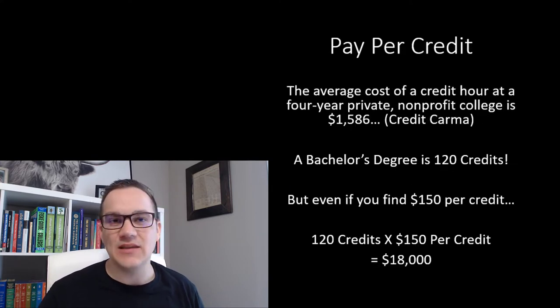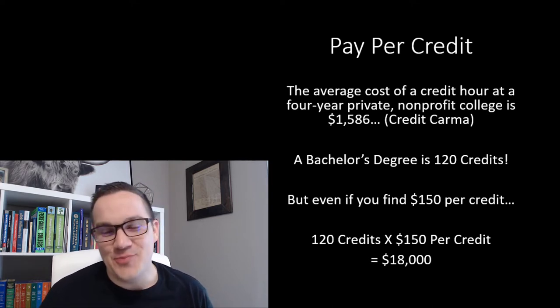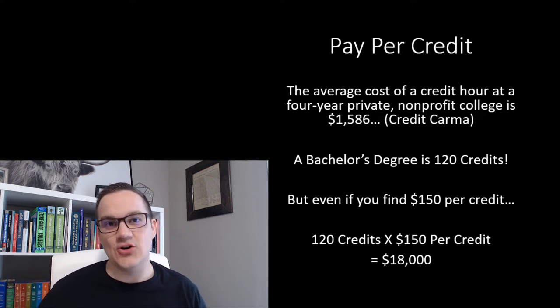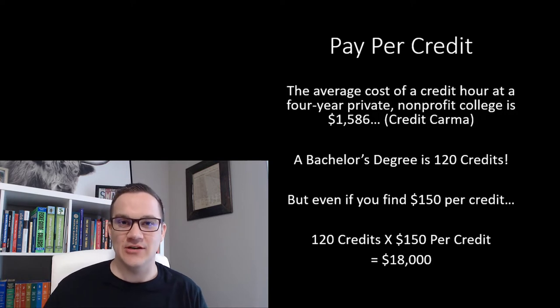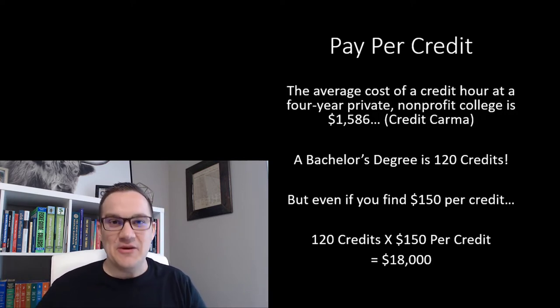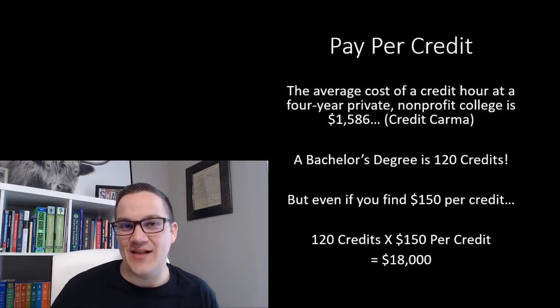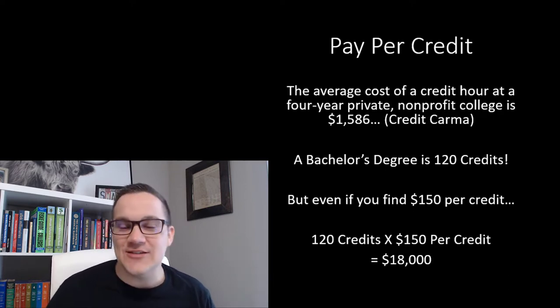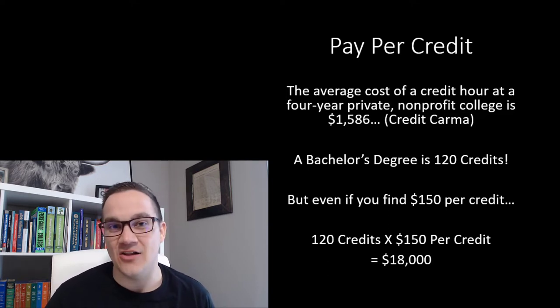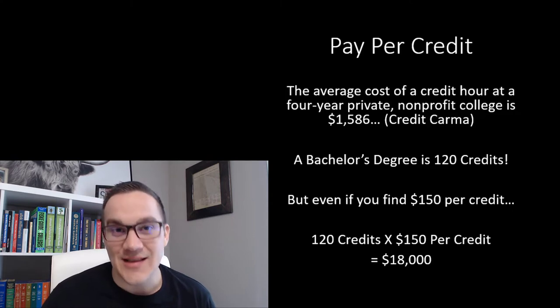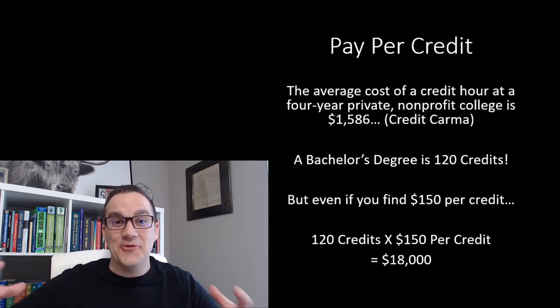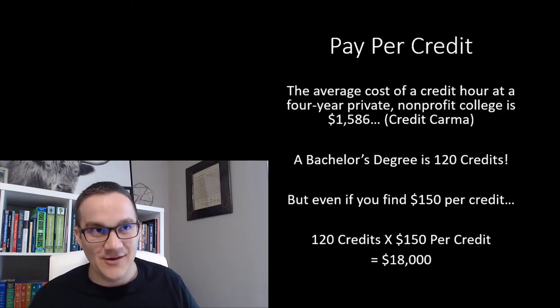Now, the next one we're going to talk about is when schools make you pay for every credit that you earn. Every college or university has their own way of charging you for tuition. Basically, most schools tell you that you need to pay for every class you take or you need to pay for every credit you earn. Well, the average cost of a credit hour in the United States is $1,586 according to Credit Karma. That's crazy. That's a lot of money. A bachelor's degree is 120 credits. That puts you over like $100,000 if you're paying per credit. That's way too much.